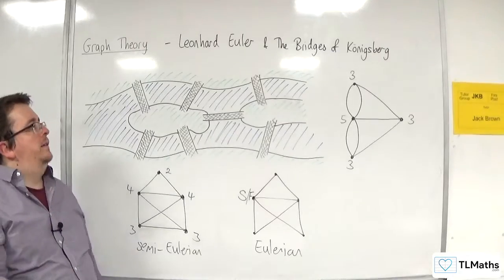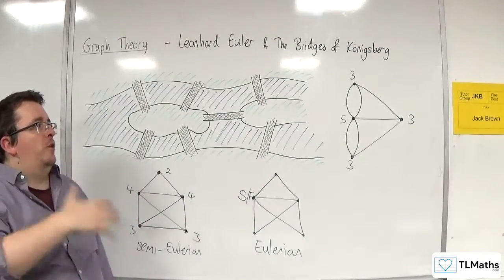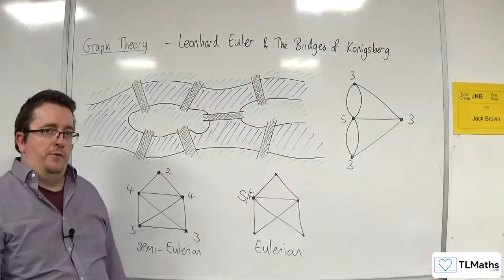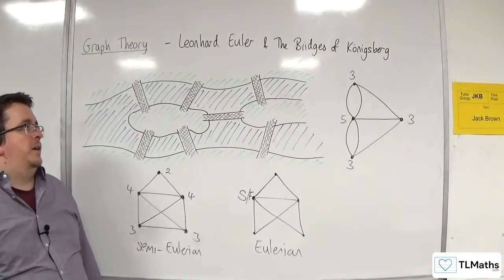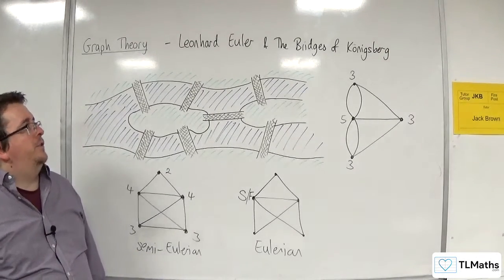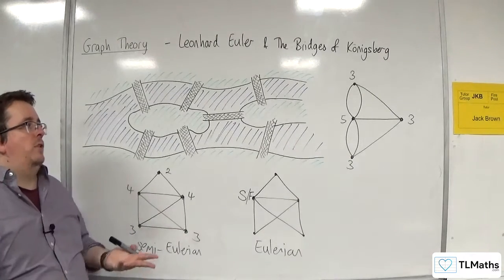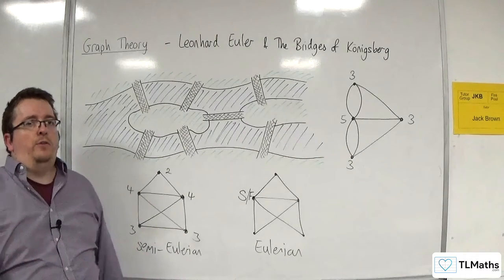So Euler was the person that showed that this problem could not be solved. So that was the Bridges of Königsberg problem. And Euler really popularized graph theory and showed its usefulness.